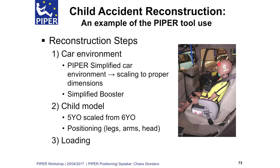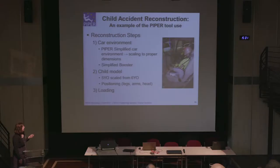To reconstruct the accident, we have several steps. The first is to reproduce the car environment. To do that, we use the Piper simplified car environment — a generalized and parameterized model that contains most components of a general car. What we did was scale this generalized model to proper dimensions to represent our Megane Scenic, and then we matched a simplified booster to look at interaction with the CRS.